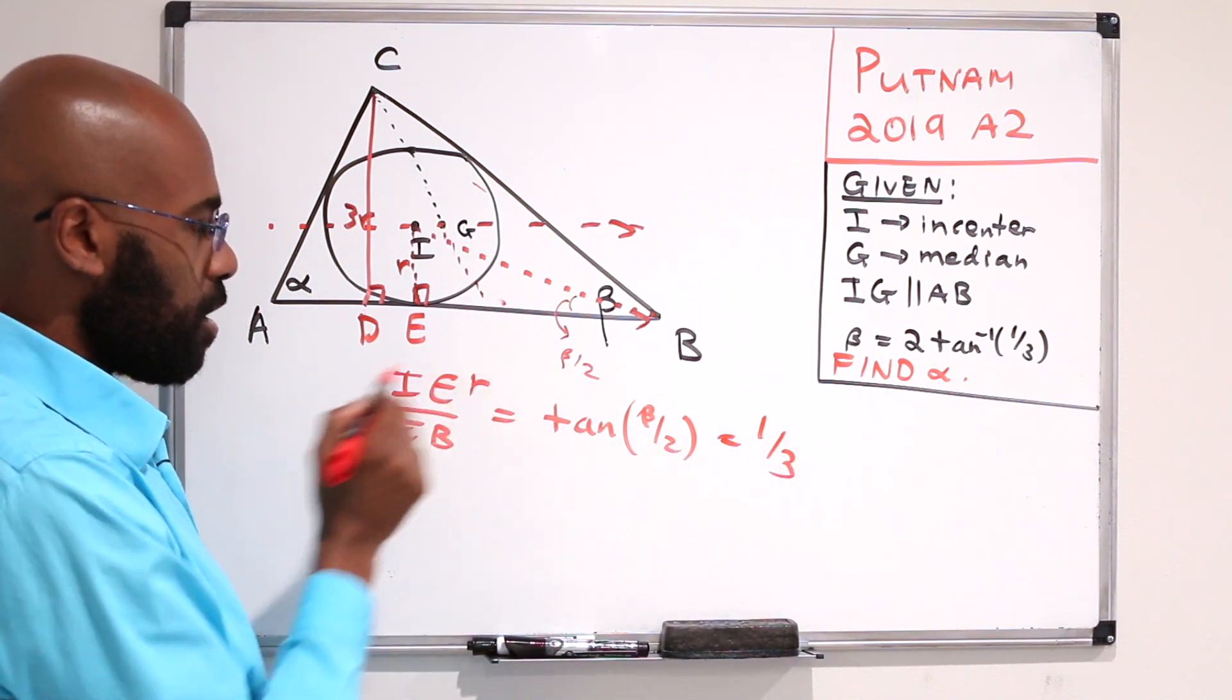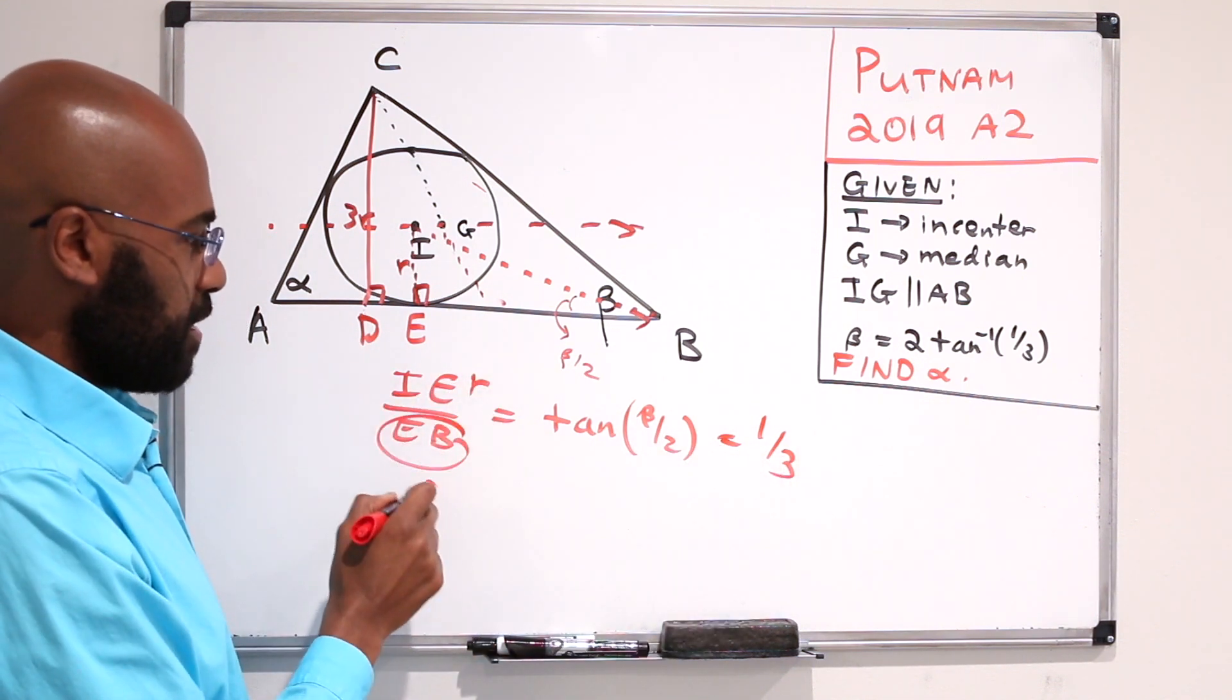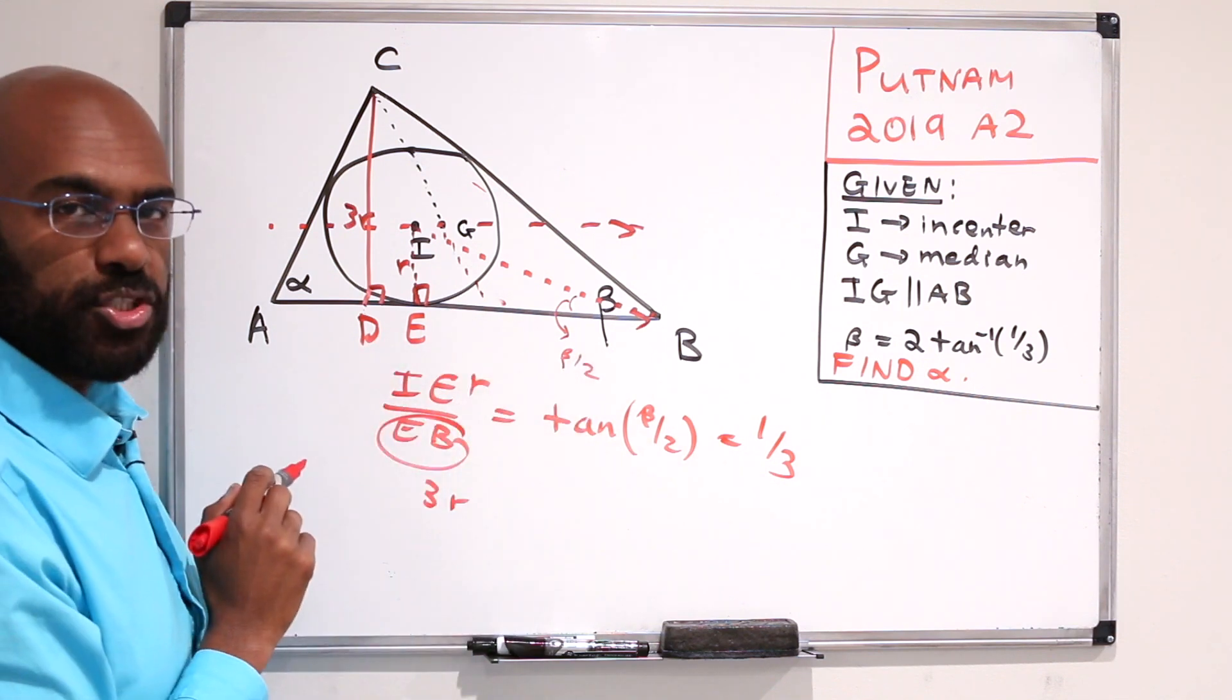And since IE is R, that makes EB have a length of 3R. So let's include that in our picture.